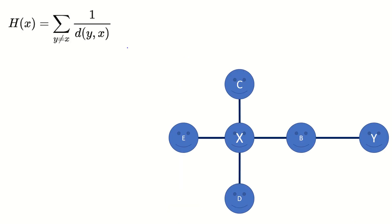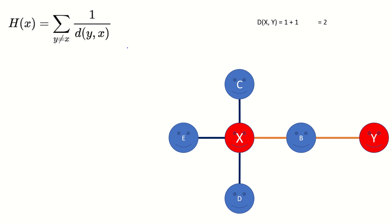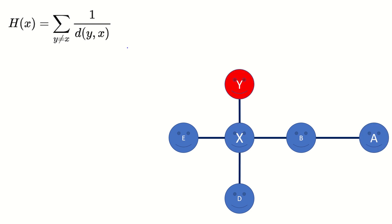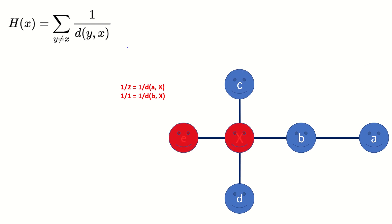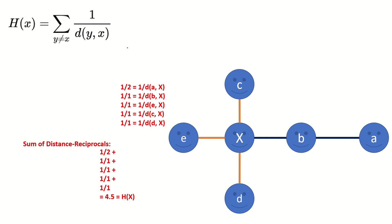To calculate harmonic centrality, pick a vertex x to analyze. Now pick some other vertex y in the graph and calculate the distance between those two vertices, then take the reciprocal — let's call this value a distance reciprocal. Now pick another vertex y, keeping vertex x fixed, and calculate the distance reciprocal between the fixed vertex x and the new vertex y. Repeat this process, picking different vertices y and calculating their distance reciprocals to the fixed vertex x until you have exhausted the supply of vertices y that are not x. Then take the sum of all of these values to get harmonic centrality for vertex x.